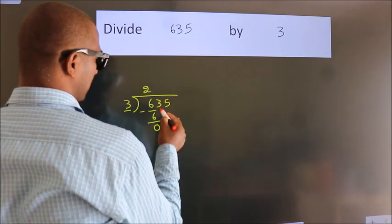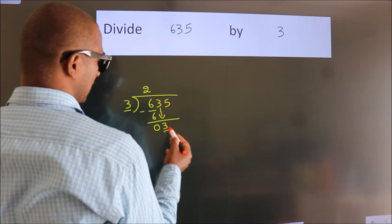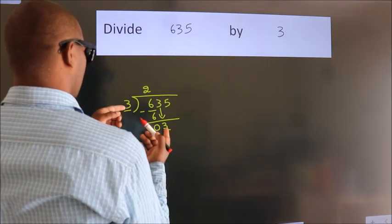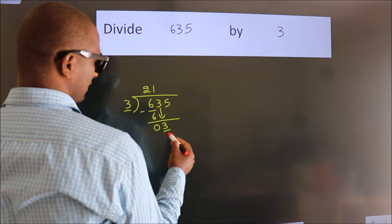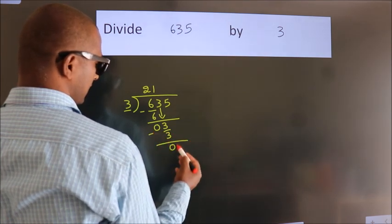After this, bring down the next number. So, 3 down. When do we get 3? In the 3 table. 3 times 1 is 3. Now, we subtract. We get 0.